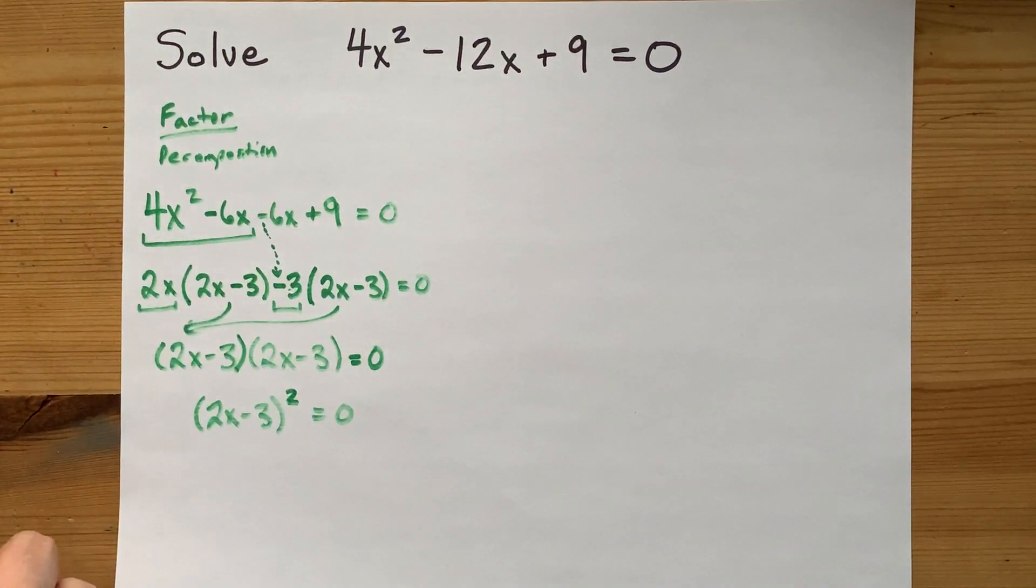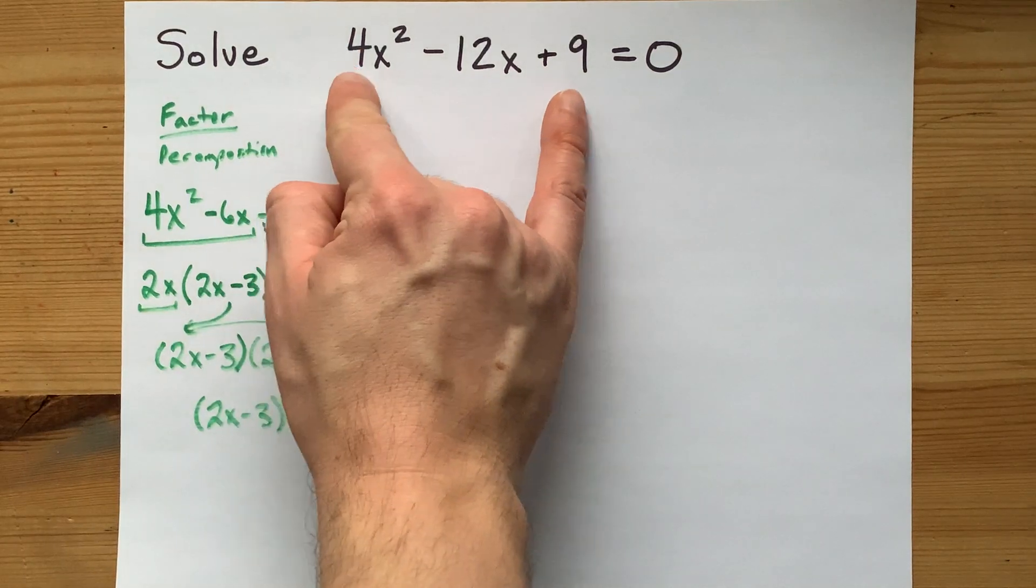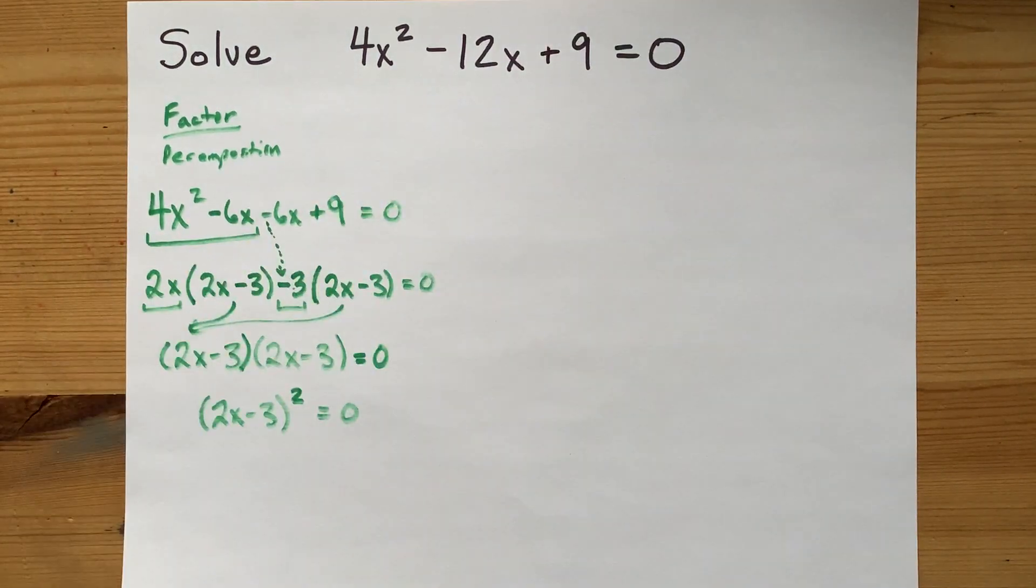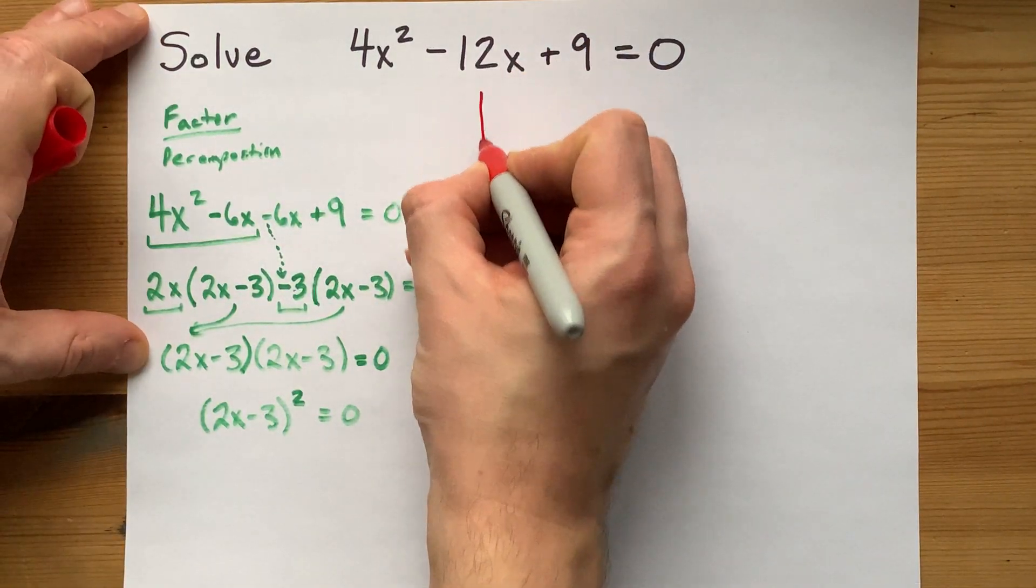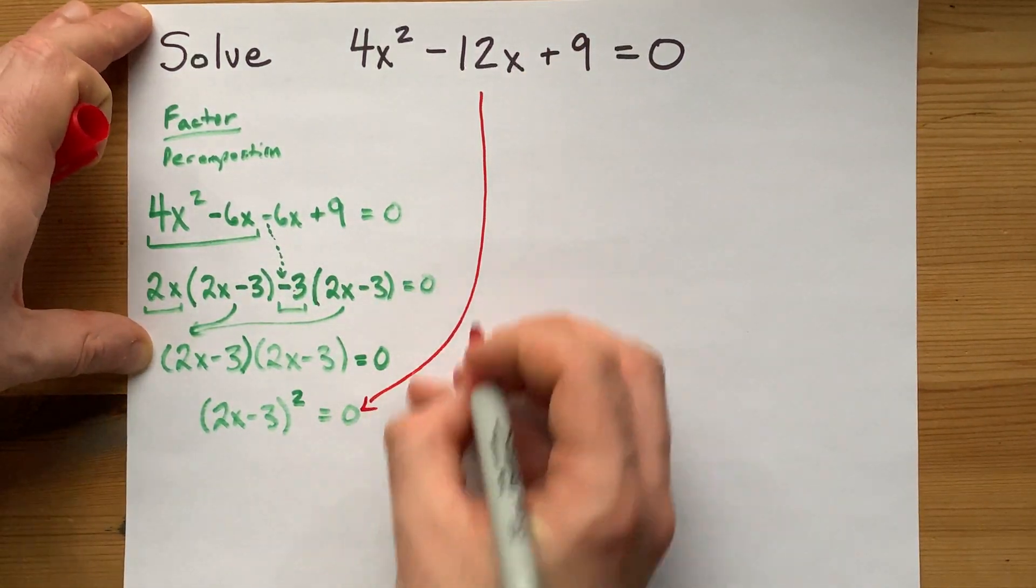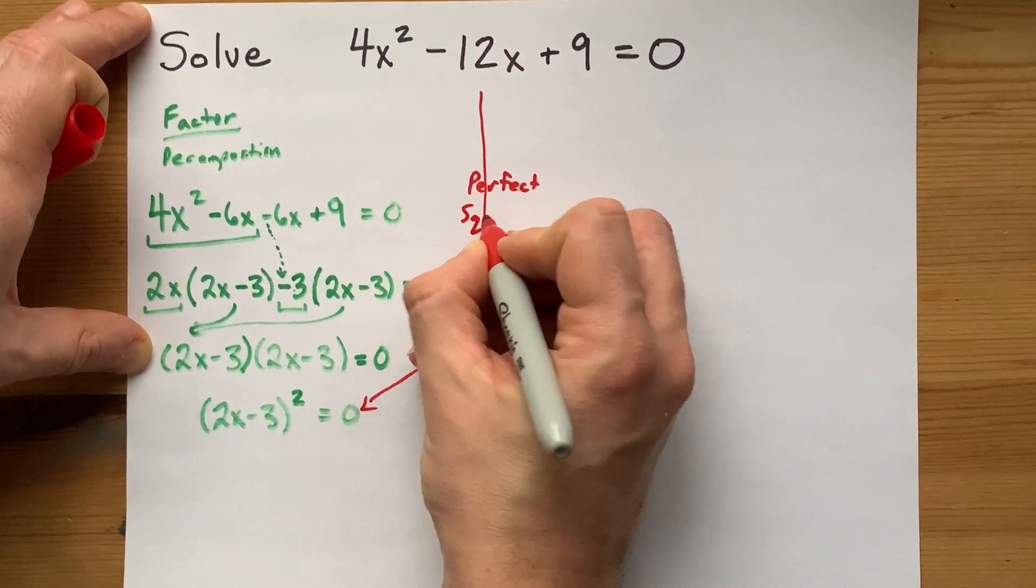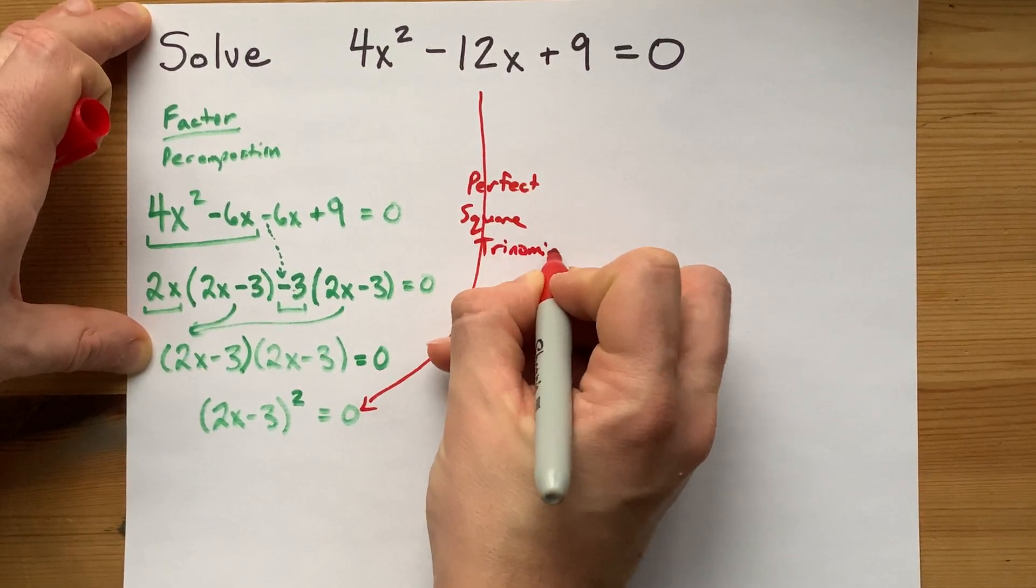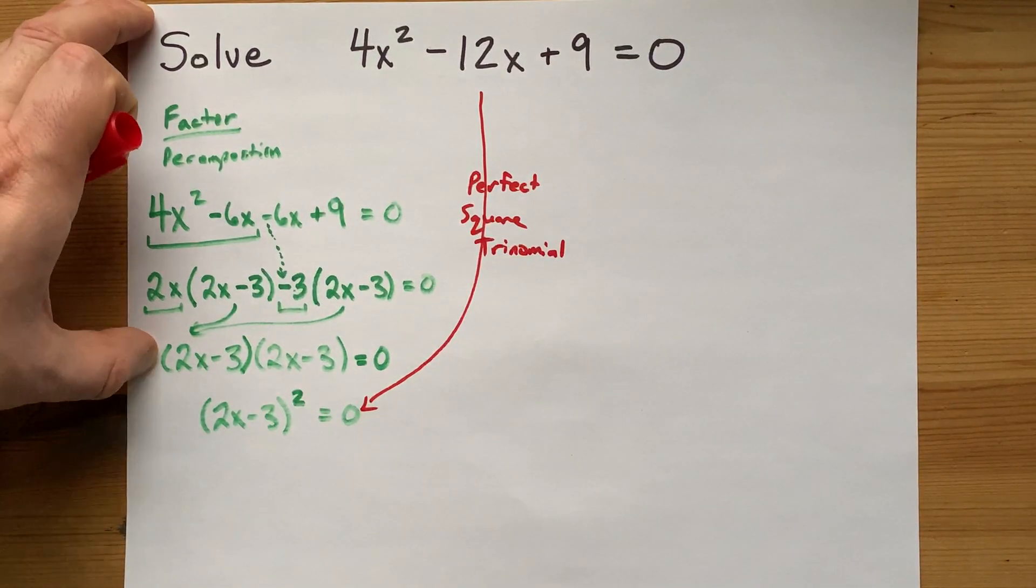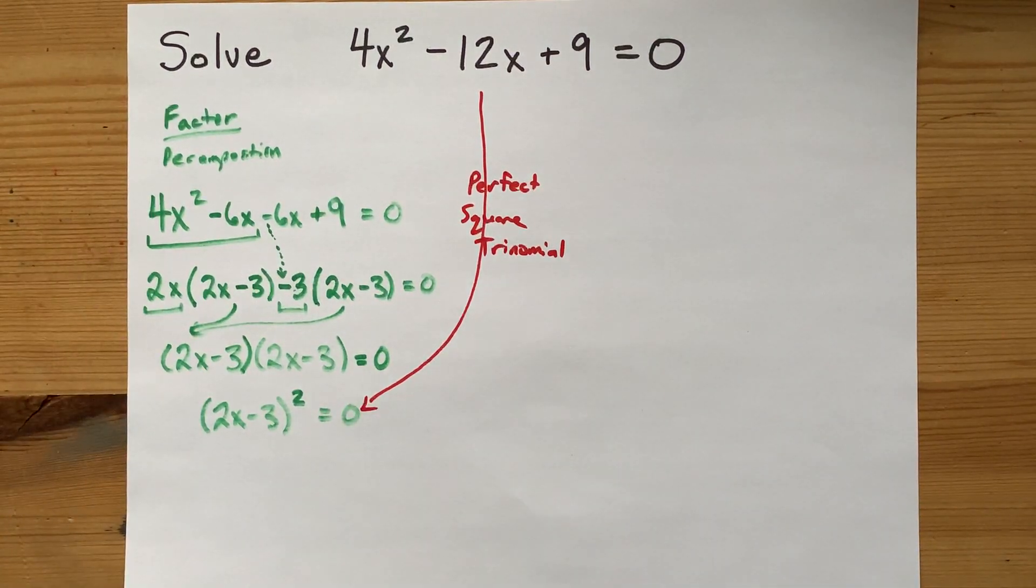And I should also let you know that once you get to a point where your two magic numbers, the ones that multiplied to 36 and added to negative 12, if the two magic numbers are the same number, then there's probably a shortcut to go straight here. That shortcut here was called perfect square trinomial. If you know the shortcut, you're probably allowed to jump straight there. But hey, decomposition always works as long as it's a factorable equation.